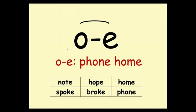This is the O sound — O split E. O — phone, home. Here are some words: note, hope, home, spoke, broke, phone.